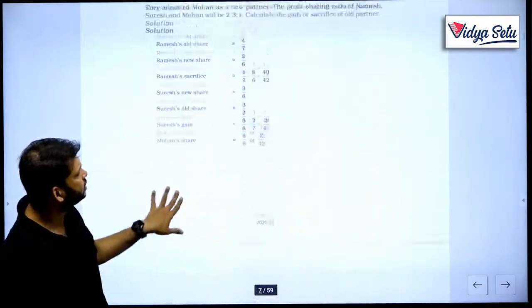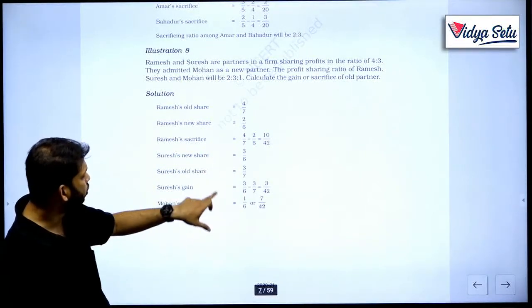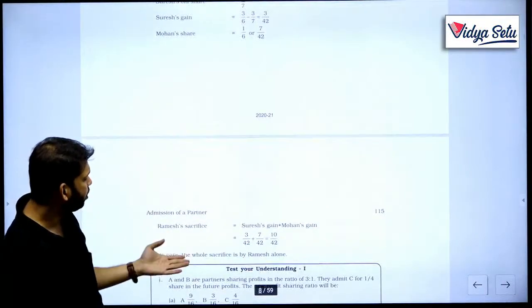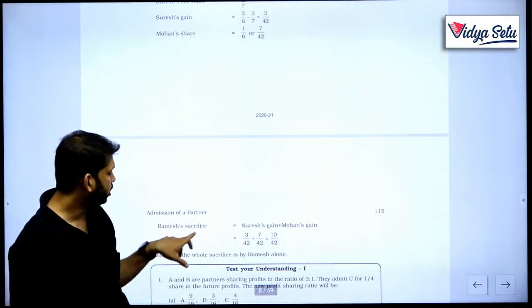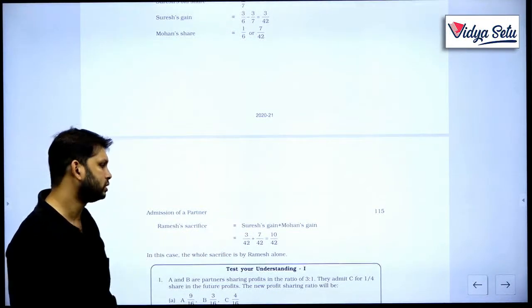So sacrifice. Whatever sacrifice is made by these two, Ramesh and Suresh, is gain for Mohan. So Ramesh's sacrifice equals Suresh's gain plus Mohan's gain.